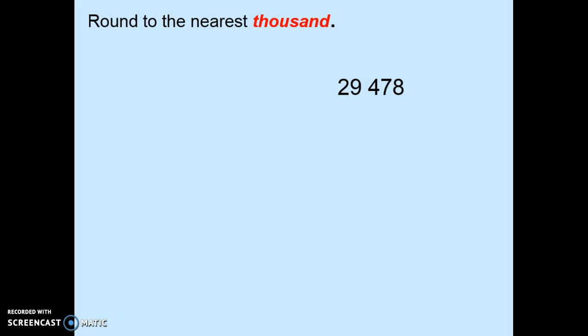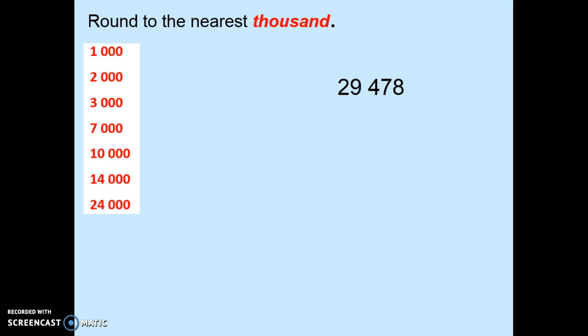Round to the nearest thousand. Your answer will be a multiple of a thousand. Here are some examples of multiples of a thousand.